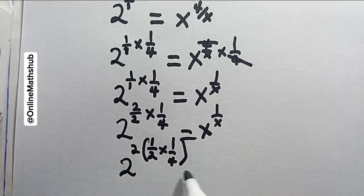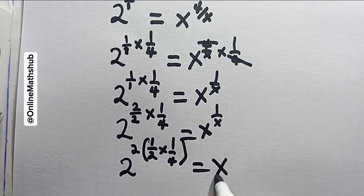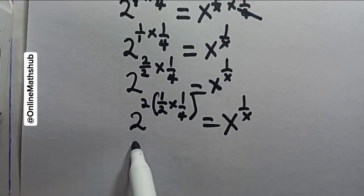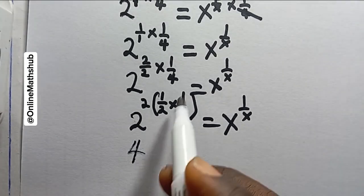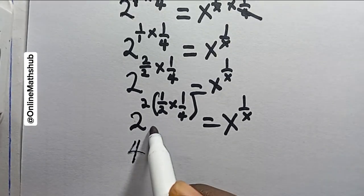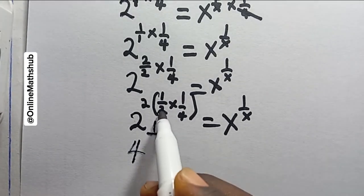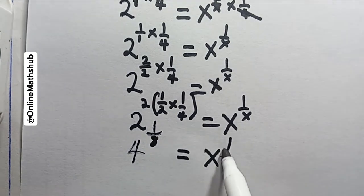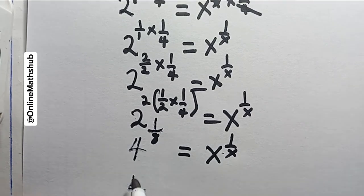This will be equal to x power 1 over x. 2 power 2 here is 4, and then if I open this bracket, this will be 1 over 2 times 4 here is 8, and this will be equal to x power 1 over x.